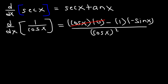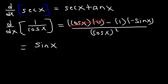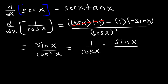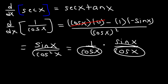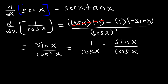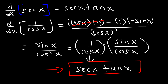Cosine times 0 is 0, so that disappears. We have negative 1 times negative sine x, which is positive sine x, all divided by cosine squared. Rewriting this as 1 over cosine x, times sine over cosine: 1 over cosine gives secant x, and sine over cosine is tangent x. So the derivative of secant is secant tangent, proved using the quotient rule.